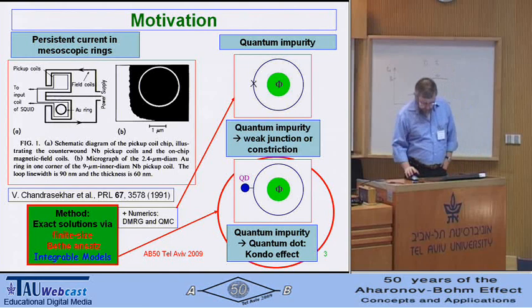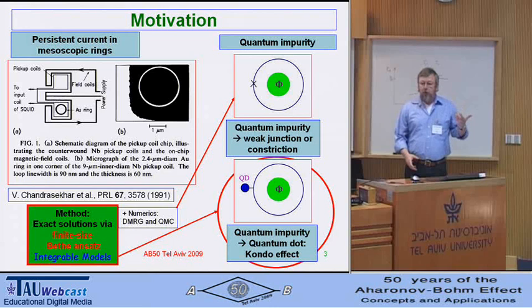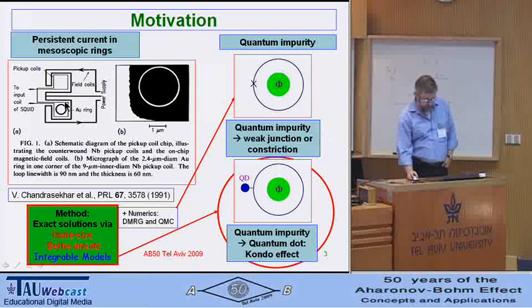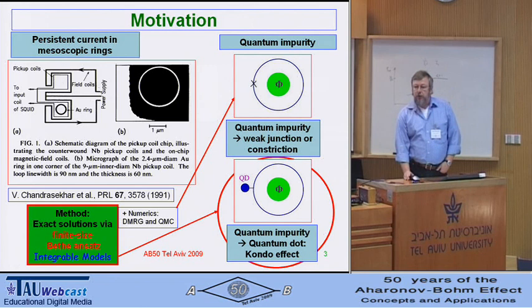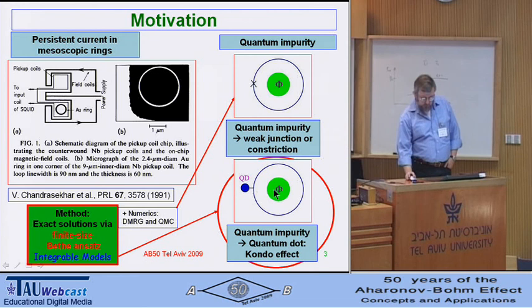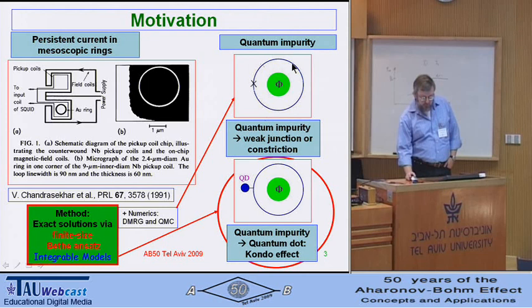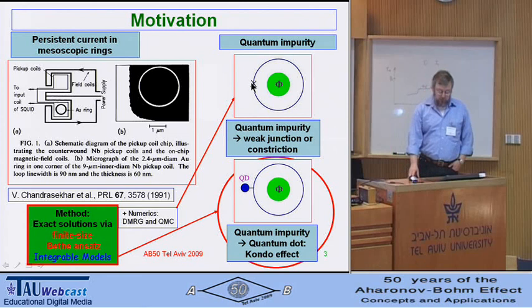We have already seen this picture before in the talk of Joseph Imri. This is a hallmark system for mesoscopic physics where you can discuss the persistent currents. What we want to do now is to put quantum impurities in or next to such a ring. I will mostly concentrate on the lower picture, a cartoon picture of a quantum dot which is side-coupled to a metallic ring pierced by a magnetic flux.